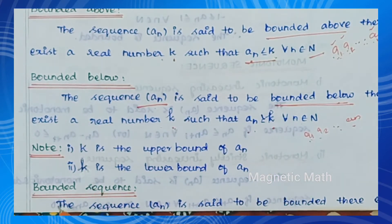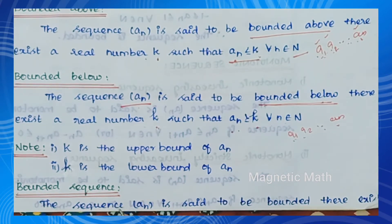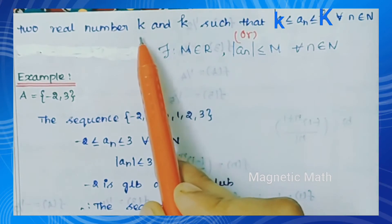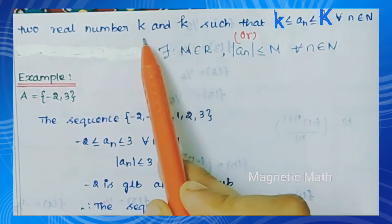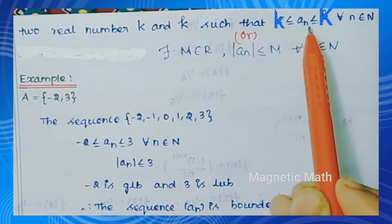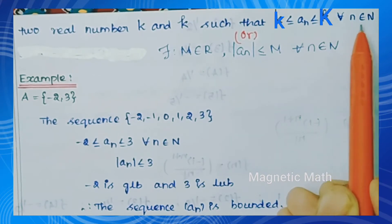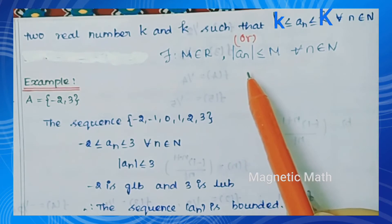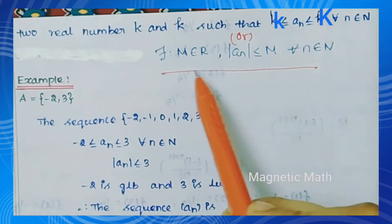So in the sequence: bounded below uses the smaller k, which is the lower bound of aₙ; capital K is the upper bound of aₙ. Next definition: bounded sequence. A sequence is bounded if it is both bounded above and bounded below — that is, bounded above as well as bounded below. There exist capital K and small k such that small k is less than or equal to aₙ is less than or equal to capital K for all n belonging to ℕ. Equivalently, there exists M belonging to ℝ such that |aₙ| ≤ M for all n belonging to ℕ.